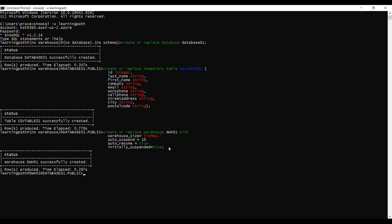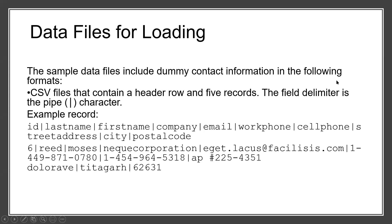Now I will go through the data files we are going to load into the Snowflake CSV table. Snowflake provides sample data files staged in a public S3 bucket. In regular use, we would stage our own data files using the AWS Management Console, AWS CLI, or equivalent client applications. These sample data files include dummy contact information: ID, last name, first name, company, email, and so on. This is just for the demo exercise. We are going to load this data into CSV_table01.